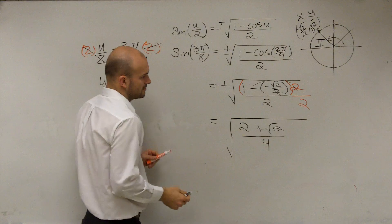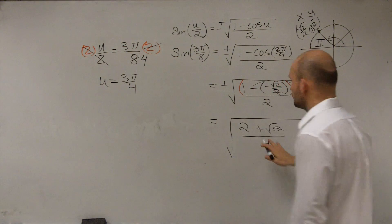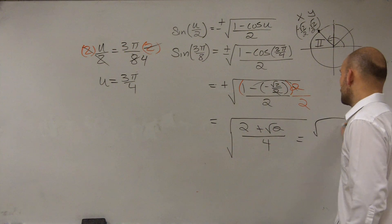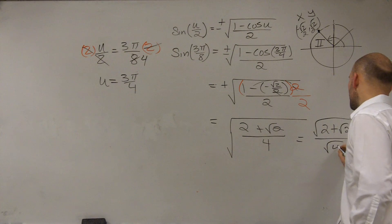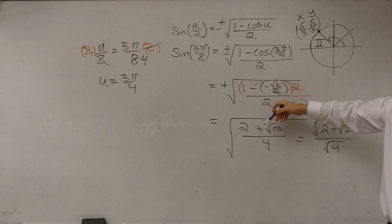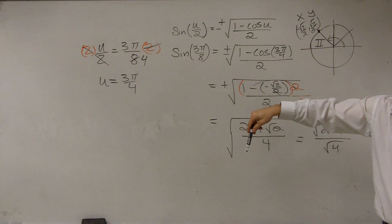Then we know that, or hopefully we know that, you can break up the square root into square root of 2 plus square root of 2 over the square root of 4. You can break up a square root when using division to the top and to the bottom.